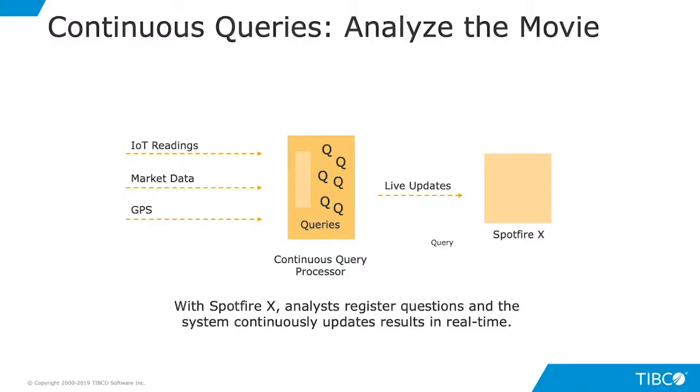So continuous queries sound cool, but how do they work? Continuous query processing is a technique in Spotfire 10 that lets the computer ask and answer questions about data as it's moving — kind of like the way your brain processes images in a movie.